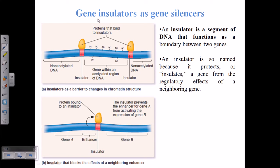Now let us talk a little bit about gene insulators, which can also act as gene silencers. We have seen methyl transferase act as a gene silencer, as well as HDAC to act as a gene silencing agent. But now we are going to see there are some sequences present in the DNA which can also act as gene silencers. They are called gene insulators.